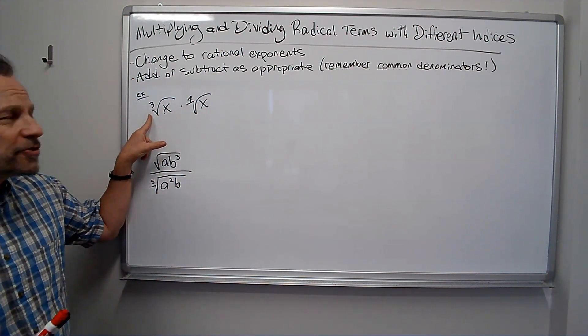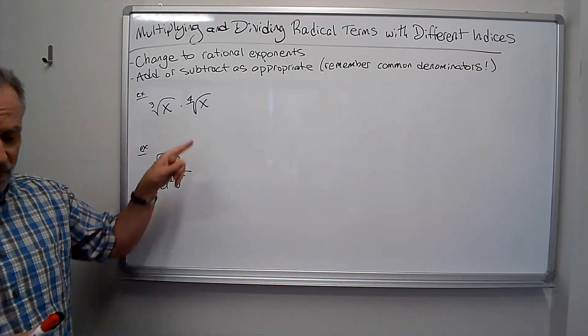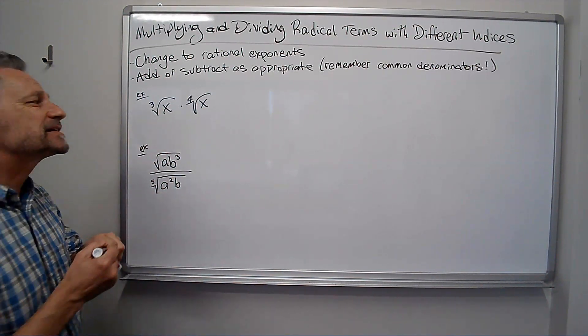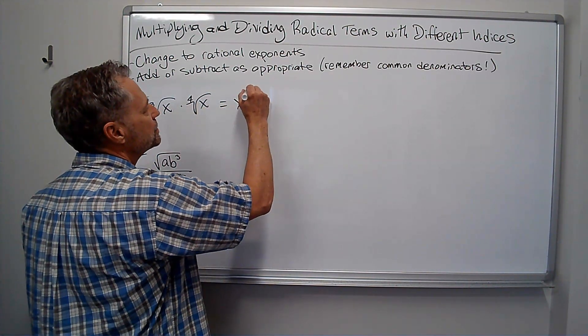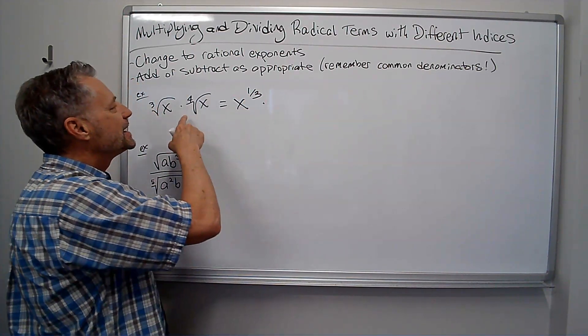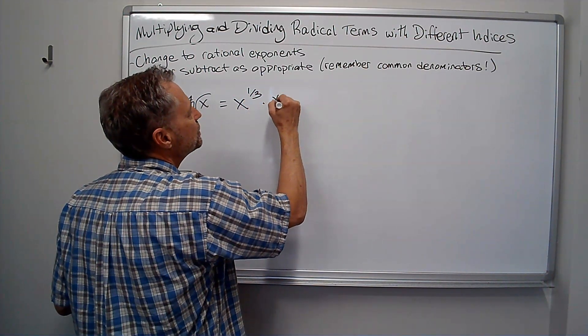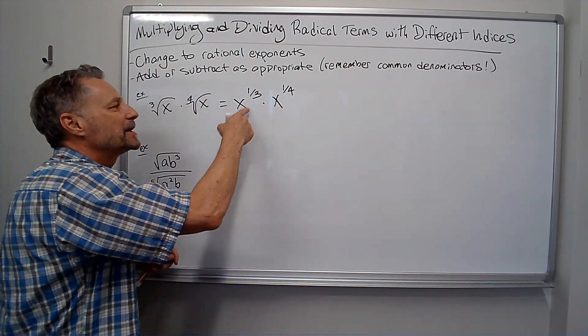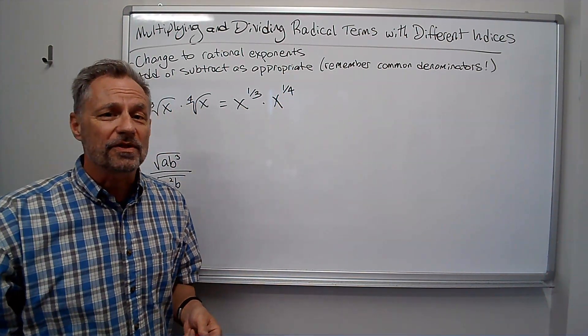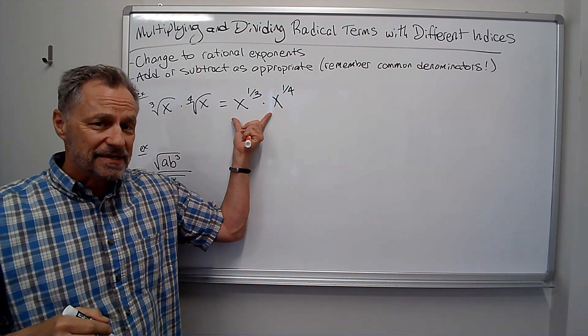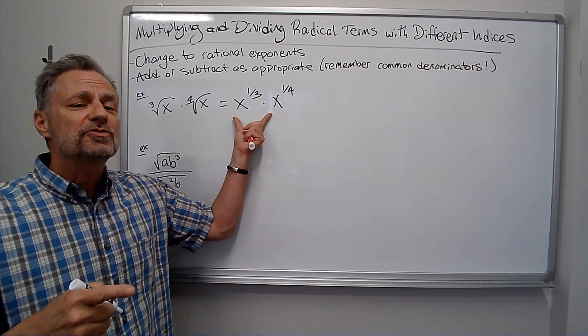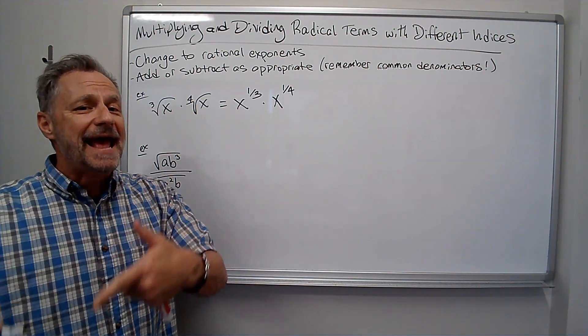I've got the third root of x times the fourth root of x. Well, the third root of x means x to the one-third power. The fourth root of x means x to the one-fourth power. So what I'm doing is I'm multiplying x to the one-third times x to the one-fourth. I have the same base. I can multiply these two things together, keeping the base, adding the exponents.